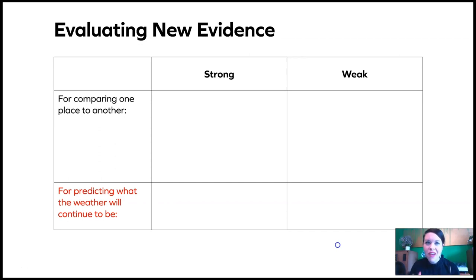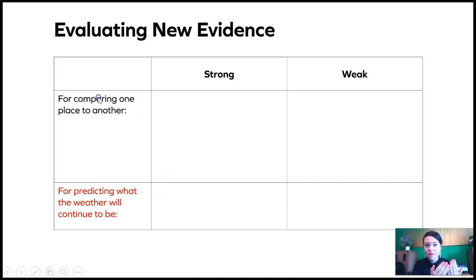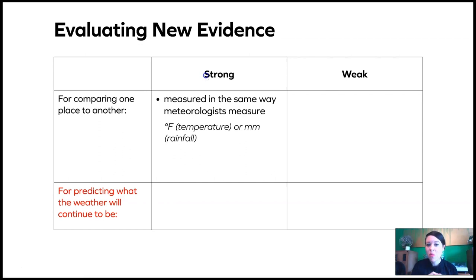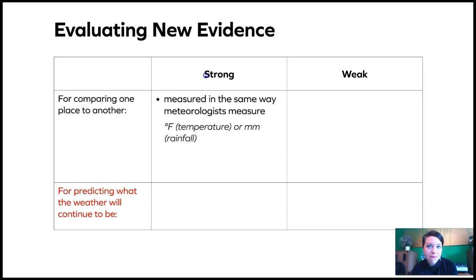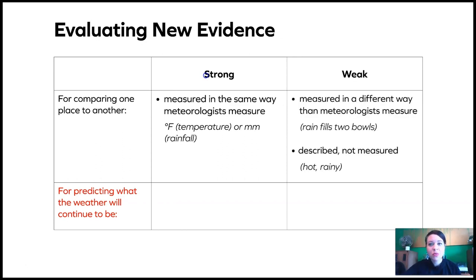Do you remember what it means to evaluate something? It means to judge how useful it is. In chapter one, we were trying to compare one place to another, and we decided that a piece of strong evidence must be measured in the same way that meteorologists measure — for example, temperature in degrees Fahrenheit and rainfall in millimeters. A piece of weak evidence would be things measured in a different, inconsistent way.